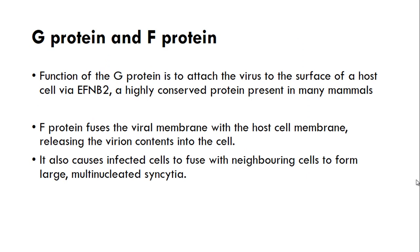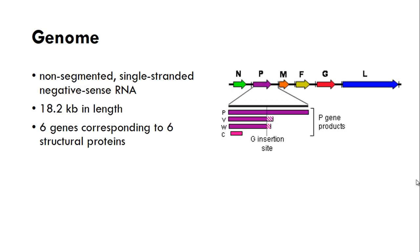The G protein binds to the host cell via EphB2 receptor, and this receptor protein is highly conserved in many mammals. The F protein functions to fuse the viral membrane with the host cell membrane so that it can release the virion content into the cells. It is also responsible for multinucleated syncytium formation.